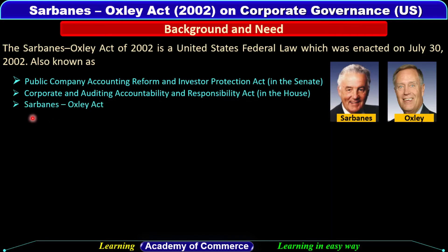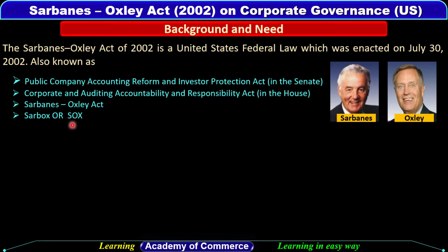It is also known as the Public Company Accounting Reform and Investor Protection Act in the Senate, and the Corporate and Auditing Accountability and Responsibility Act in the House. In short form, it is also called Sarbox or SOX.